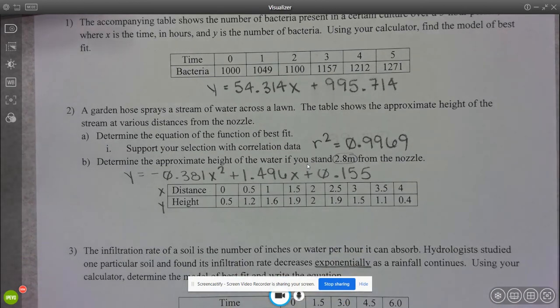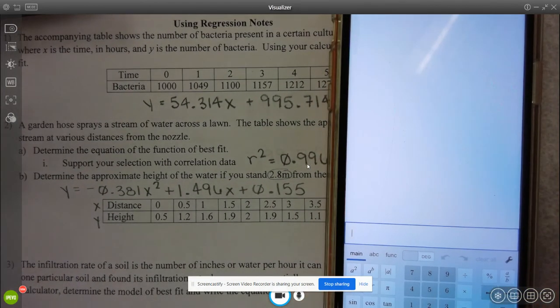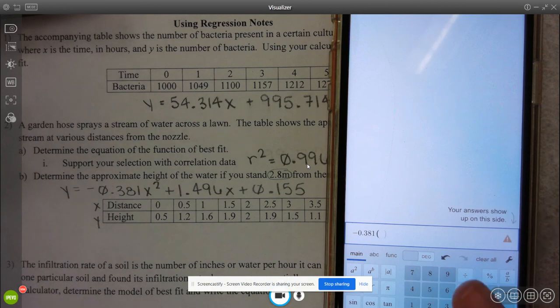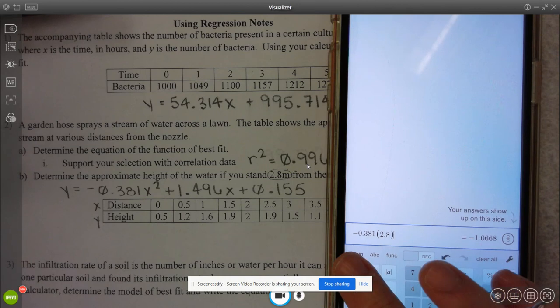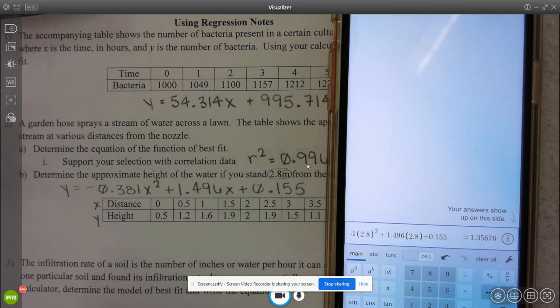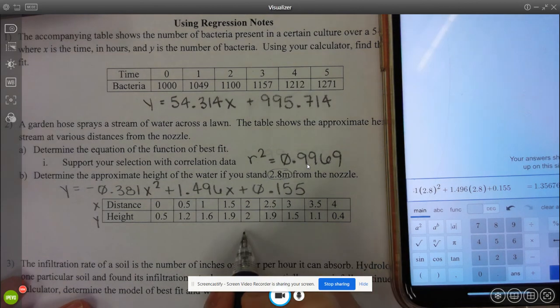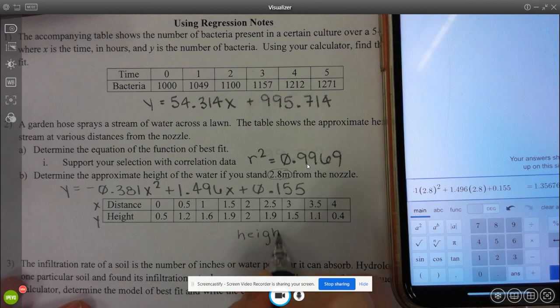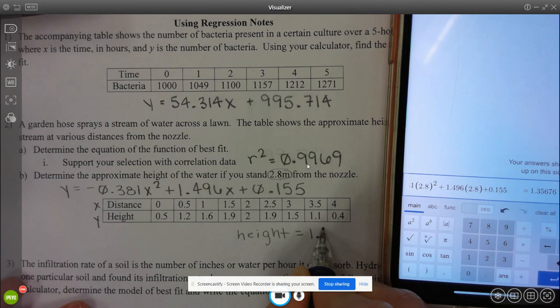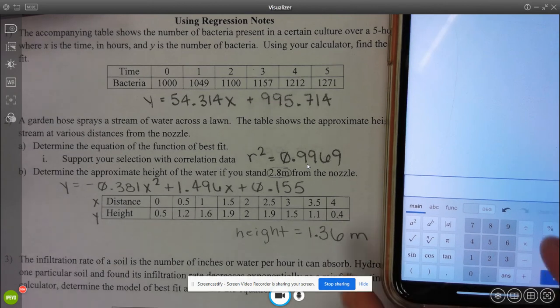And I'm just going to open up my Desmos scientific calculator on my phone and show you really quick. So I would do negative 0.381 times 2.8 squared plus 1.496 times 2.8. So we would assume that if we were standing 2.8 meters from the nozzle, the height would be 1.3. Now since these are all one decimal place, our answer, if this was multiple choice, would probably only show us one decimal. I'm going to put 2 just to be safe.